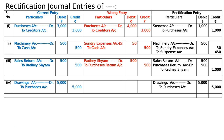The total of the rectification journal entries is seventy-five thousand on both the debit and credit sides. This is the final answer.